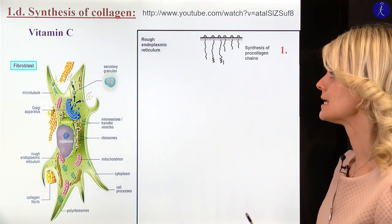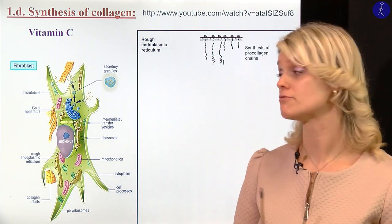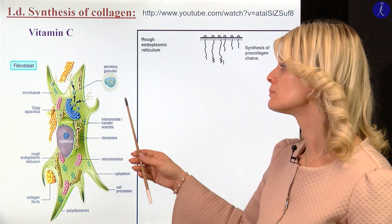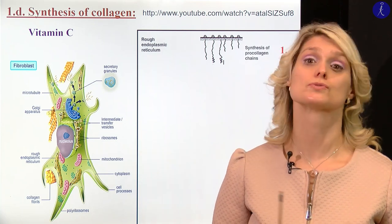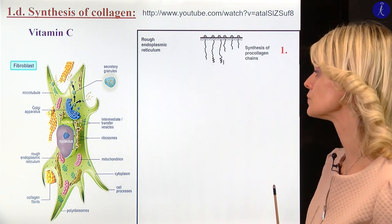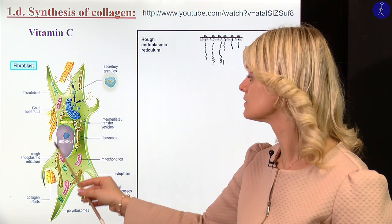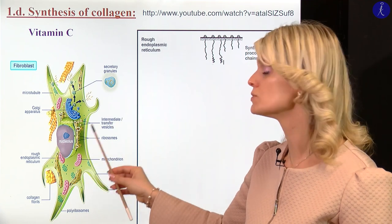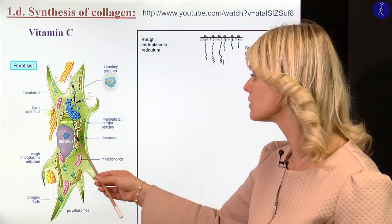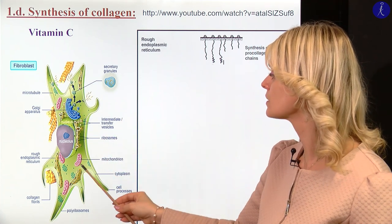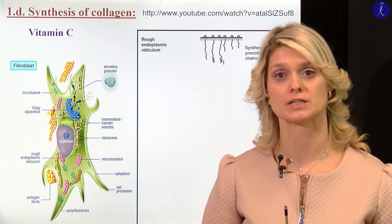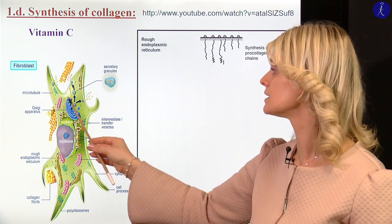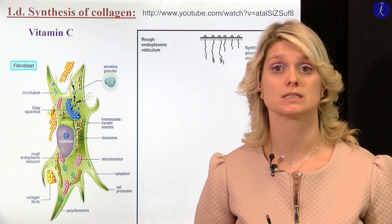Let's talk about the synthesis of the fibers. We know very well that the fibroblasts — one of the fixed cells of the connective tissue — produce the collagen fibers and also the ground substance. The fibroblasts have a big cytoplasm with a lot of processes, a very large nucleus with a prominent nucleolus inside, and the cytoplasm consists of rough endoplasmic reticulum where protein synthesis occurs, as well as Golgi apparatus and mitochondria.